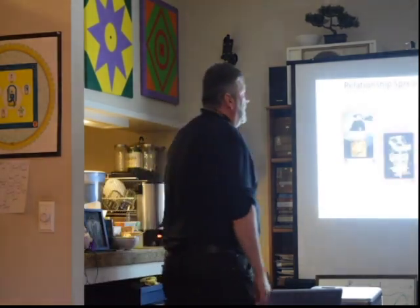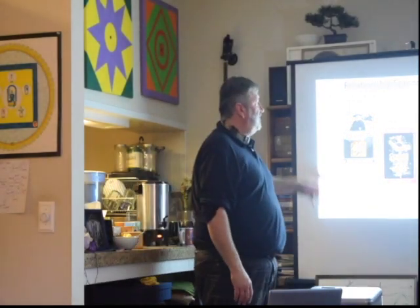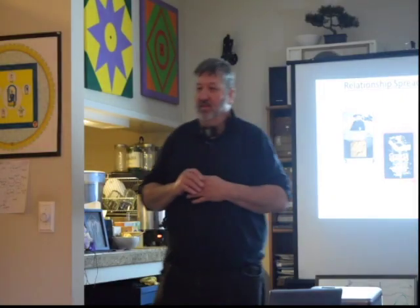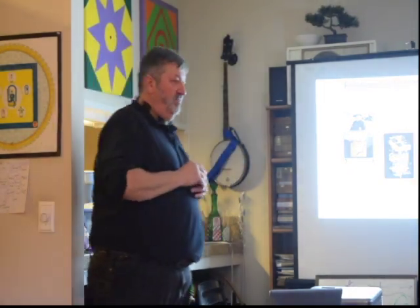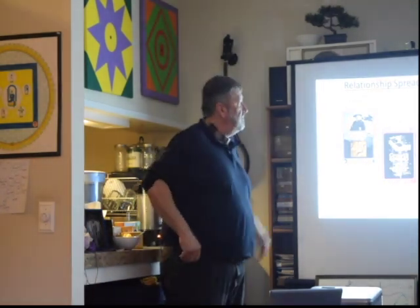Next one — another three-card spread. You're probably all familiar with this one; it's common in lots of different divination systems. It's the relationship spread: you, other, and then the relationship itself. So if you were to look at this, you can manufacture a question in your head. Here's you — Elder, positive pull of fulfillment. Other — Growth, positive pull of comprehension. And then card three — Nexus, negative pull of distortion. Tell me about your interpretations — anybody have a hit?